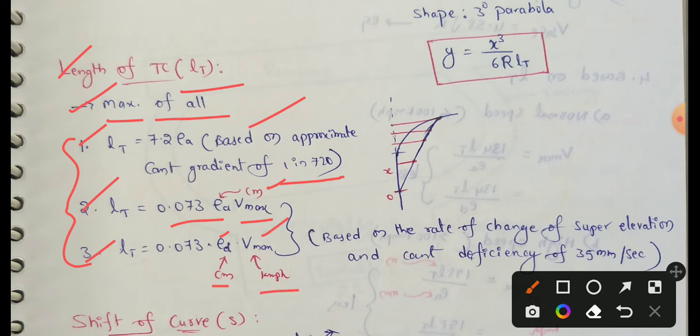Third: length of transition curve equal to 0.073 into cant deficiency ED in centimeters, into maximum speed in km per hour. This is based on the rate of change of superelevation and cant deficiency of 35 mm per second. The highest value, maximum value of all, this value is the length of transition curve.